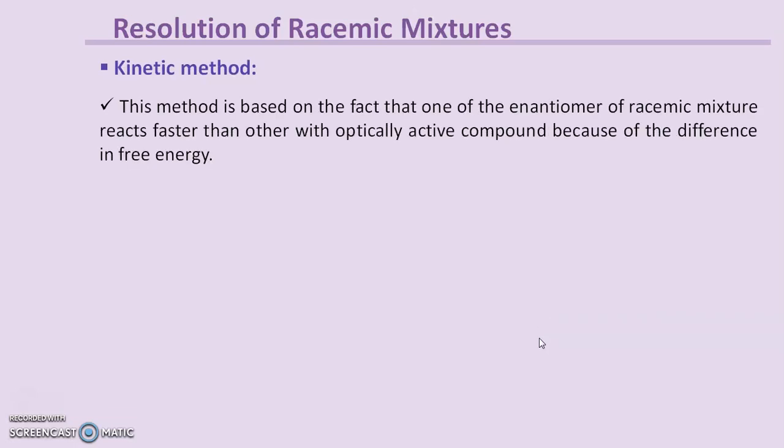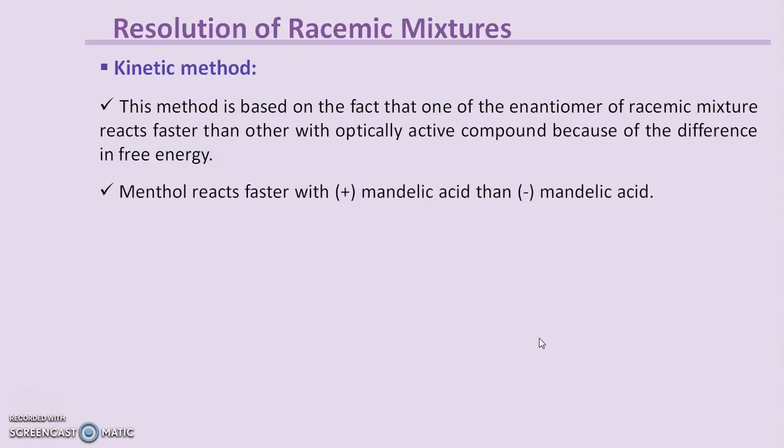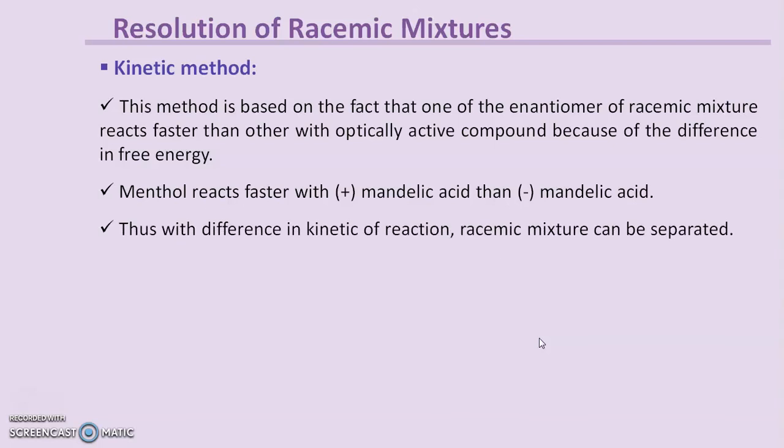Moving to the kinetic method. This method is based on the fact that one enantiomer of a racemic mixture reacts faster than the other with an optically active compound, due to the difference in free energy. For example, menthol reacts faster with dextromandelic acid than with levomandelic acid. Thus, with the difference in kinetics of reaction, the racemic mixture can be separated. There are also other methods such as resolution by adsorption chromatography, and de-racemization, which can also be used for the resolution of racemic mixtures.